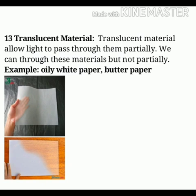The other type of material is translucent material. Translucent materials allow light to pass through them partially, so we can see through these materials but only partially. Examples of translucent materials are oily white paper and butter paper.